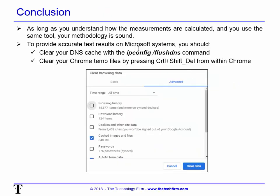The conclusion is that as long as you understand how these measurements are calculated and you use the same tool and the same methodology, your methodology is sound. Don't worry about right and wrong — just make sure you understand whatever you do, how you do it, and how it works. To provide accurate test results on a Microsoft system, you should always clear your DNS cache, clear the Chrome temp files, and also clear your ARP cache. That way your machine is always working fresh — resolving ARP, resolving DNS, not working off cached files — and that gives you the most consistent, reliable results.